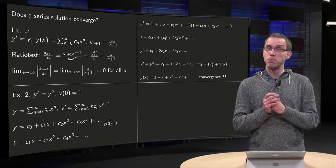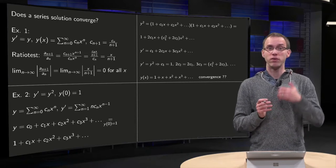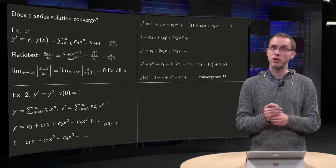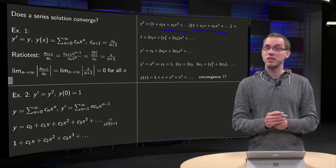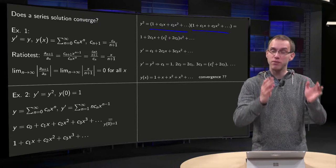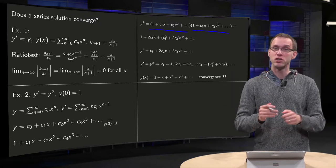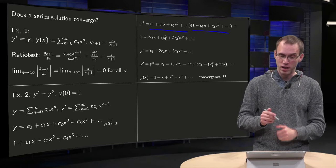Next we want to plug this into the differential equation, where we have y prime equals y squared, so we compute y squared equals y times y. And this gives a terrible mess, because you have an infinite series times an infinite series, so we get a very big product with all kinds of cross terms.